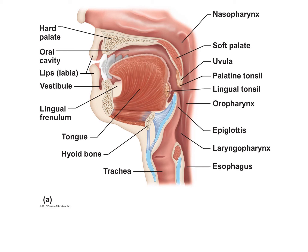At the oropharynx and the laryngopharynx we have common passageways for food and air. Both are part of the respiratory and digestive systems. The esophagus is only part of the digestive system, just as the larynx is only part of the respiratory system, because this is where food and air are separated.